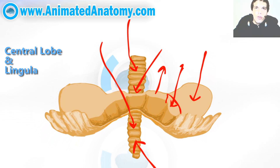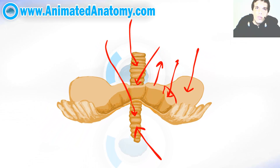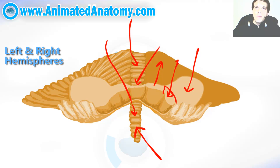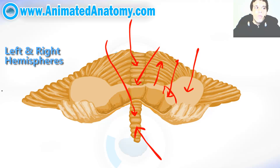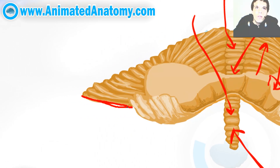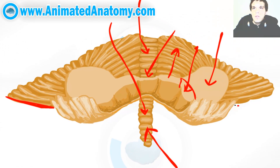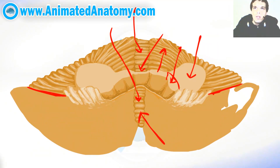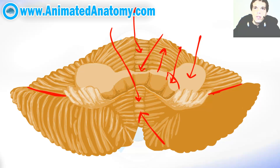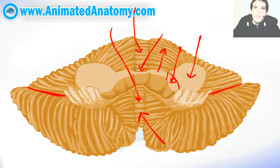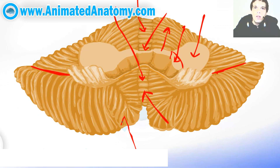Beside the vermis there are also two hemispheres — the left one and the right one. These are the parts of the hemispheres above the horizontal fissure, so this over here is the horizontal fissure. We also have parts of the hemisphere below the horizontal fissure. On these parts of the hemisphere we can notice the tonsilla here and the vallecula over here — the vallecula is just this space over here.